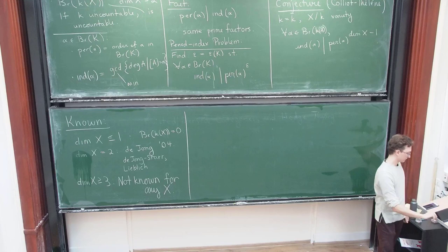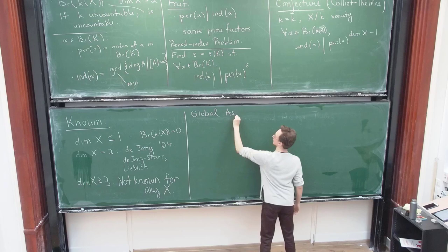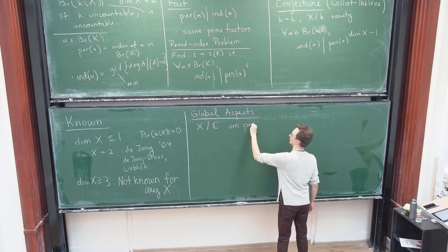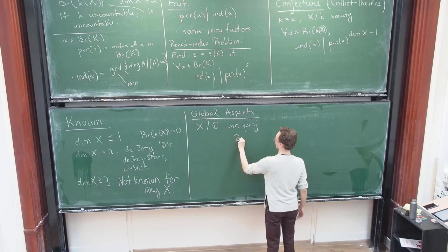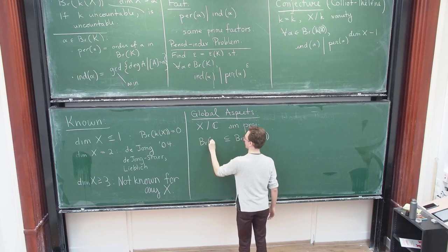Now, so let me talk, so let me say a few words. I'm going to tell you some results, but before I do, let me just tell you a sort of the global picture of the conjecture. So the setting I'm going to take for the rest of the talk is I'm going to take X to be projective over the complex numbers. And so inside of the Brouwer group of the function field, which is generally ginormous, there's a particular subgroup, which is the Brouwer group of X.